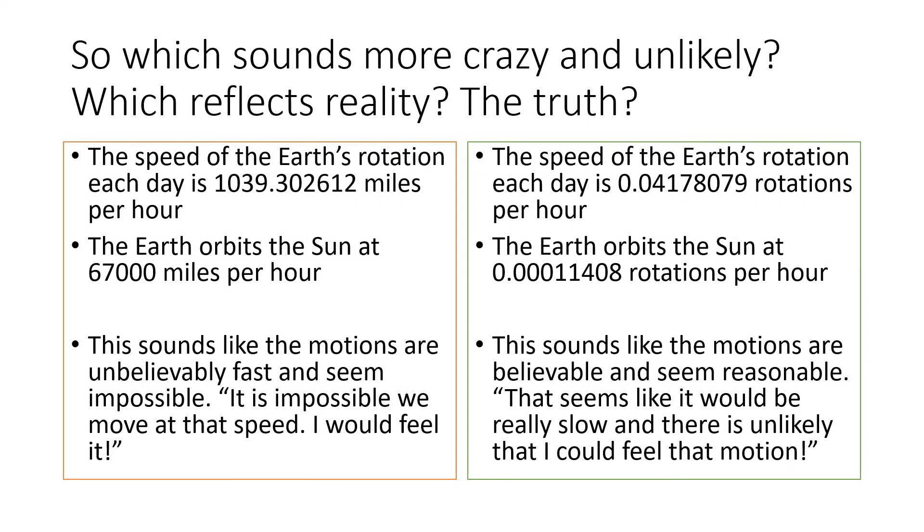So which sounds more crazy and unlikely? Which reflects reality? The truth? The speed of the Earth's rotation each day is 1039.302612 miles per hour. The Earth orbits the Sun at 67,000 miles per hour. This sounds like the motions are unbelievably fast and seem impossible. It is impossible we move at that speed.